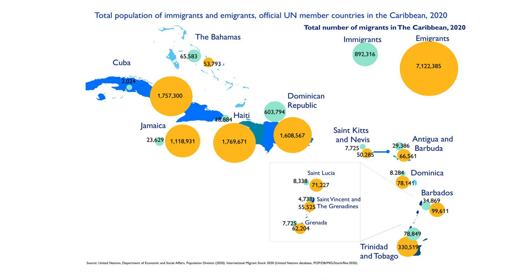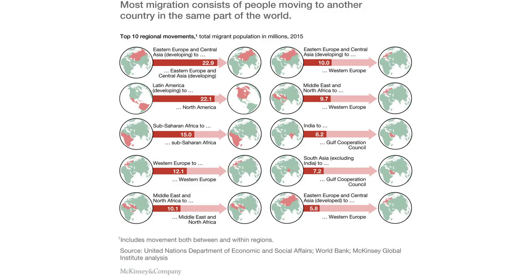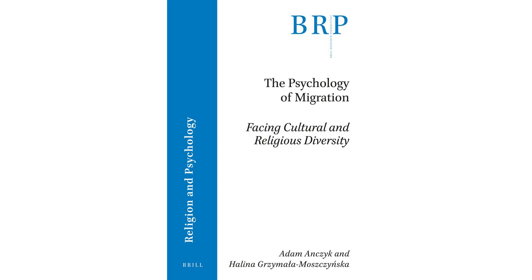As we can see, migration has played a pivotal role in shaping cultural history. It has allowed for the exchange of ideas, the blending of traditions, and the formation of diverse societies. In the next segment of this series, we will explore the positive and negative impacts of migration on cultural heritage.